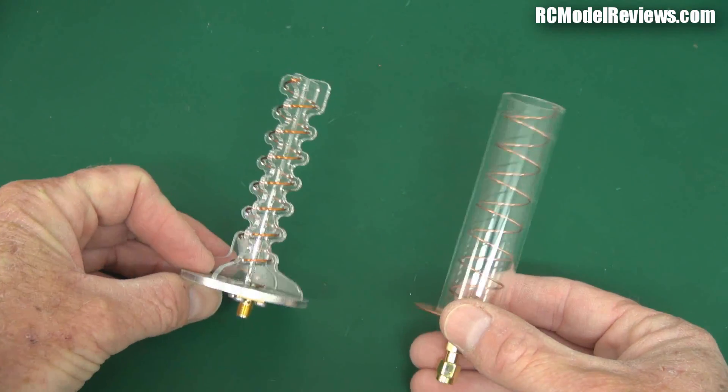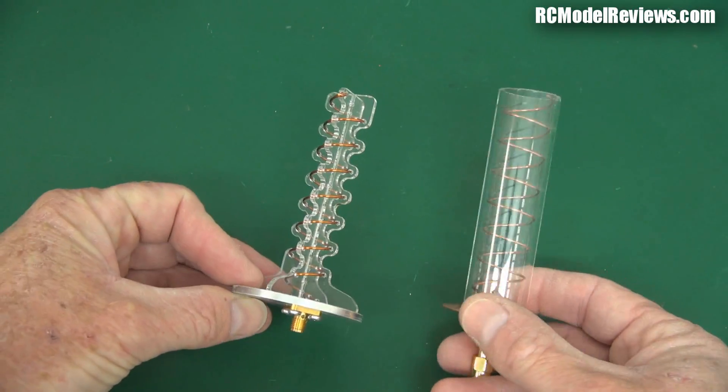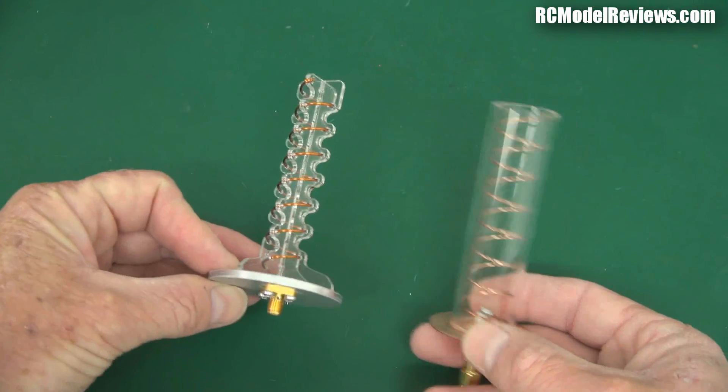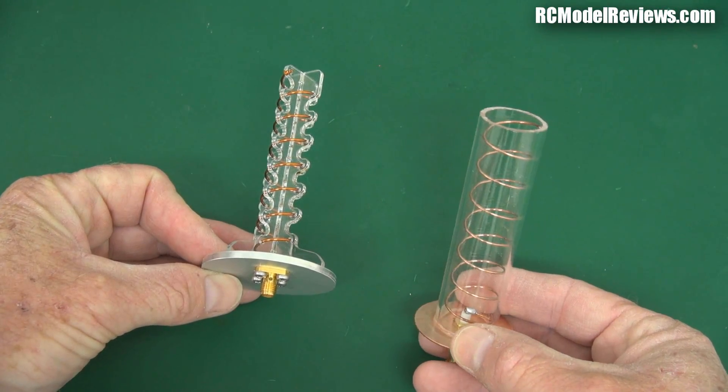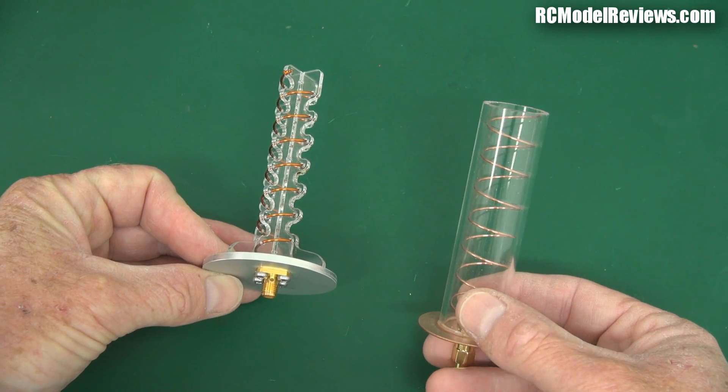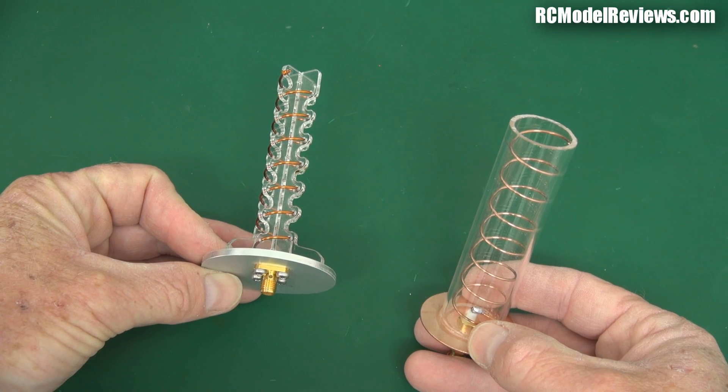But what I'm going to do is, in some videos coming up, I'm going to be doing some comparative testing. Now, one thing I noticed also with this is that this is left-hand polarized, this is right-hand polarized. This didn't say it was left-hand polarized, I just ordered it. So you've got to be careful what you order. This obviously would not work at all well with a right-hand polarized cloverleaf on the transmitter or skew planar.